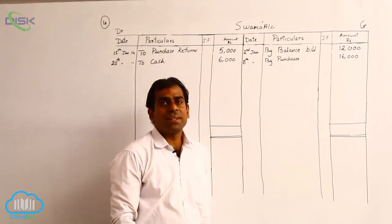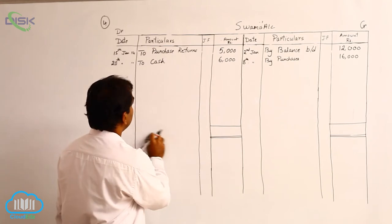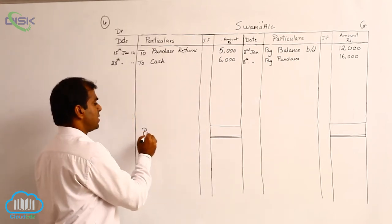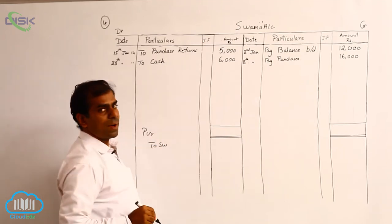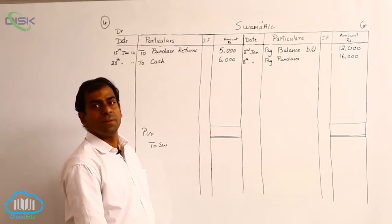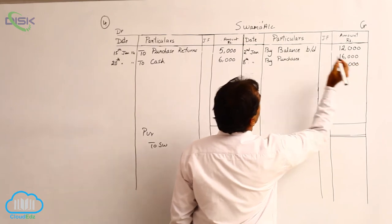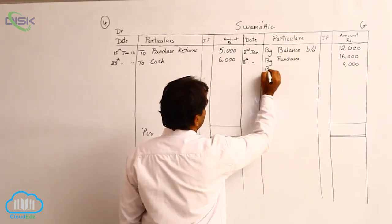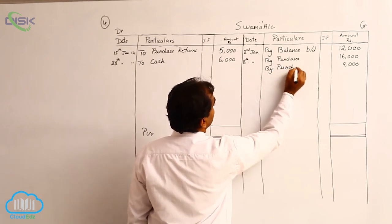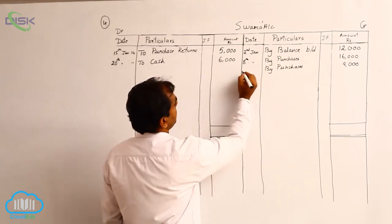The next transaction is on 24th January: goods purchased from Swami again. The journal entry is purchases to Swami. Swami's account is to be credited with rupees 9,000. On the credit side, we enter 9,000 in the amount column. The constant 'by' is used, and the reason is purchases, so we write 'purchases' in particulars. The date is 24th January.